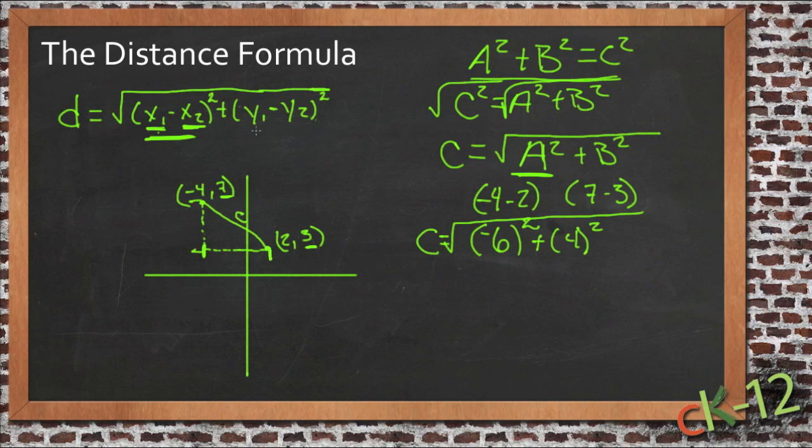Square that and add it to the difference between the two y points also squared. And then we take the square root of the whole thing so that we go straight to our missing side instead of having to find it and then take the square root.